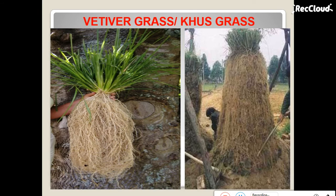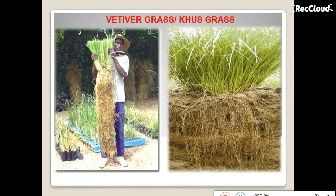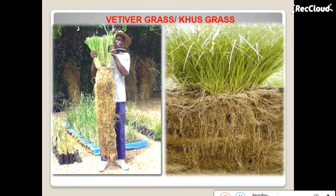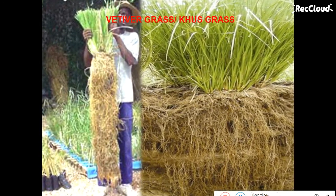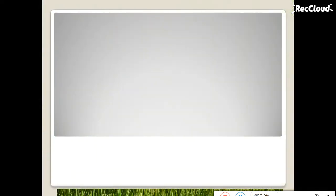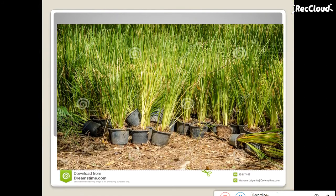Vetiver grass belongs to the Gramineae family. Vetiver grass mainly uses its roots, which are very beneficial to add aroma and taste in food, as well as fragrance to soft drinks.